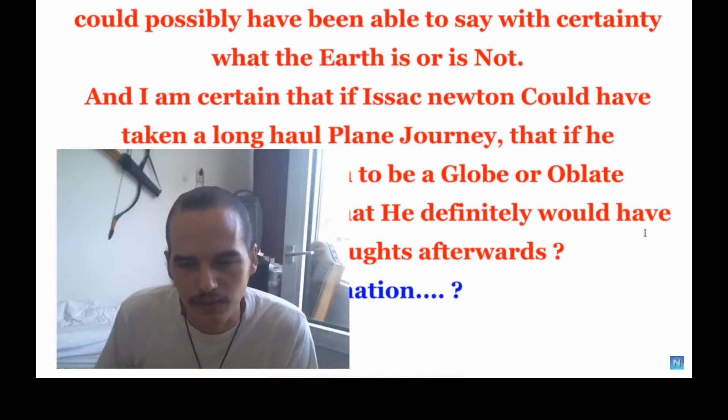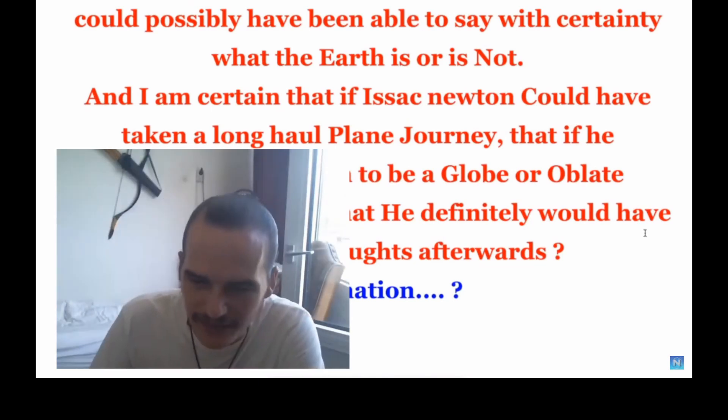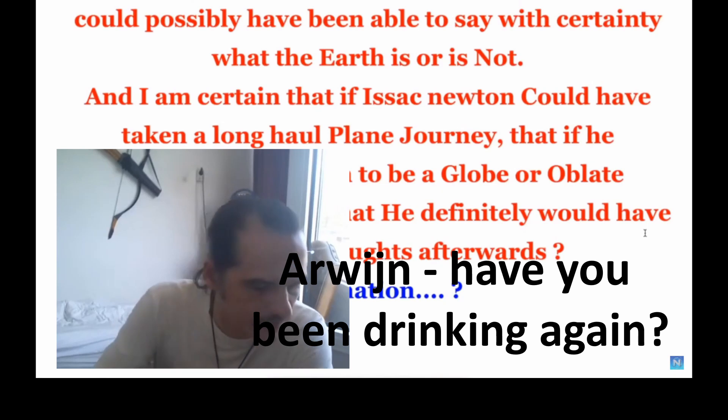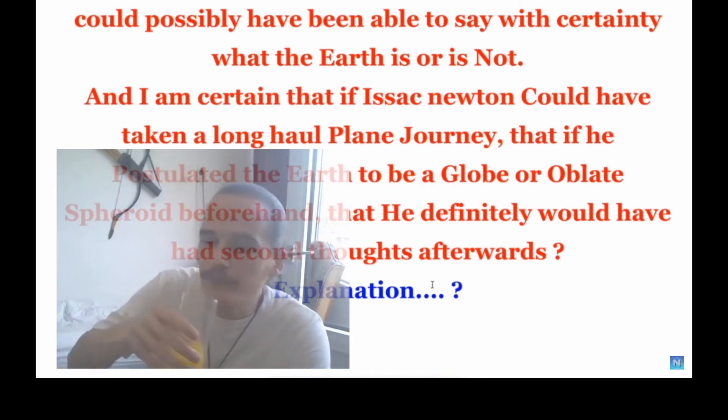Now we don't personally know if this is true or false that he said this, but I will say that nobody of Isaac Newton's time could possibly have been able to say with certainty what the earth is or is not. I am certain that if Isaac Newton could have taken a long hauled plane journey, that if he postulated the earth to be a globe or oblate spheroid beforehand, that he definitely would have had second thoughts afterwards. Yeah, you know the internet says a lot of stuff. Idiots like this guy on the internet saying stuff like the earth is flat.